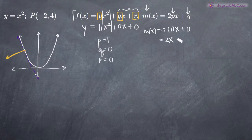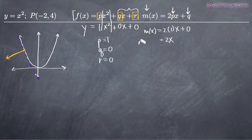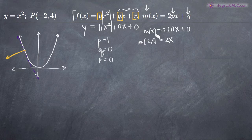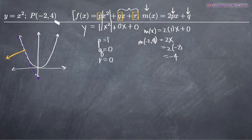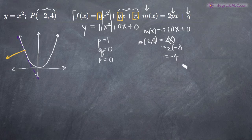2x is going to be the slope of the tangent line. We're most concerned with the slope at the point (-2, 4), so we plug in negative 2: m(-2) equals 2 times negative 2, which gives us negative 4. So negative 4 is the slope of our tangent line at that point.